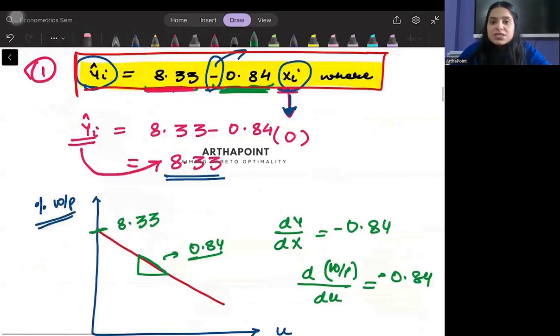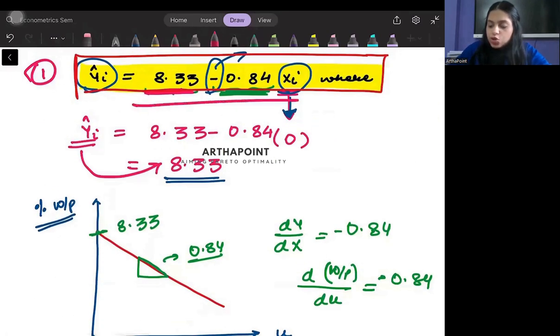Okay, now because this is a regression line, if I were to interpret the value of minus 0.84, you need to remember that this yi hat will be in the average terms.